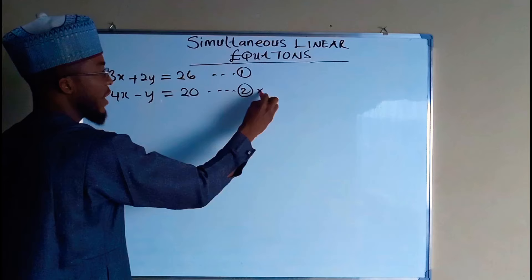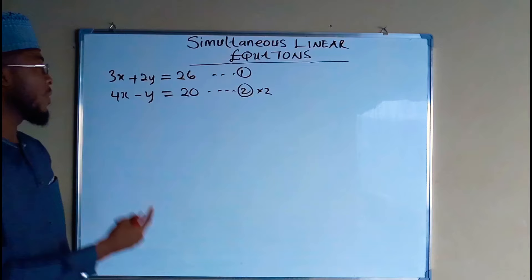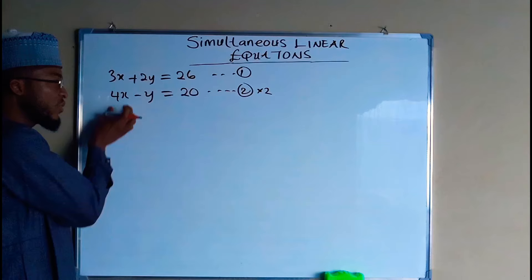If I multiply equation two by two, definitely I am going to have 2y in equation two which corresponds to 2y in equation one. So each term is going to be multiplied by two. The first term here is 4x times 2 is going to give us 8x.